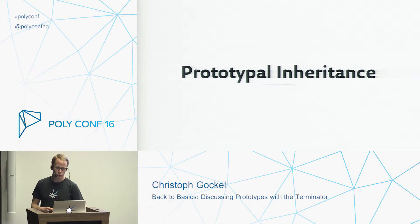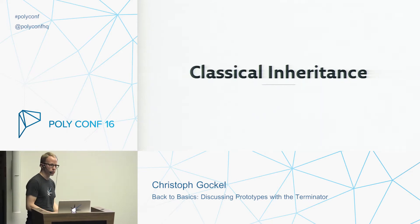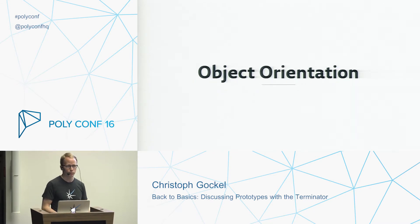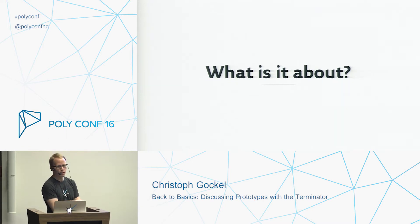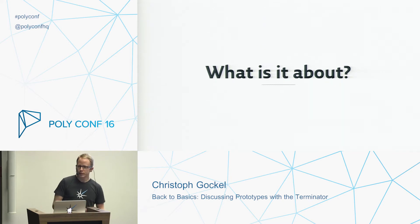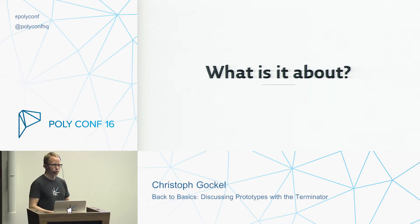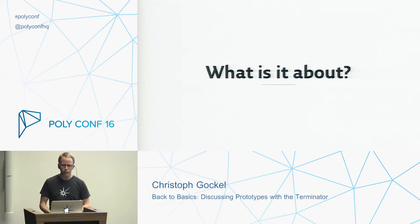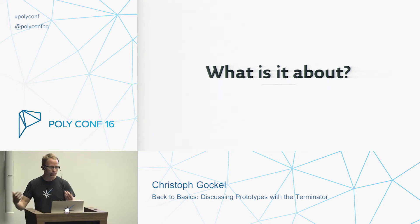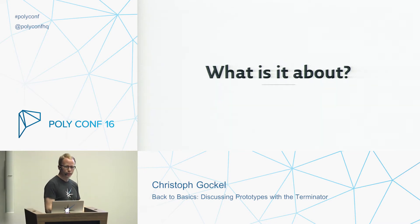While talking about prototypal inheritance, there's also classical inheritance, so we'll go a little bit into that too. Both come from the object-oriented world. What is it actually about? What does object orientation mean? The problem is we all have some sort of understanding for that, but nobody really agrees on one single definition. You ask 10 people, you get at least 11 different answers. In general, inheritance, encapsulation, composition, delegation, polymorphism — all these things somehow relate to that.